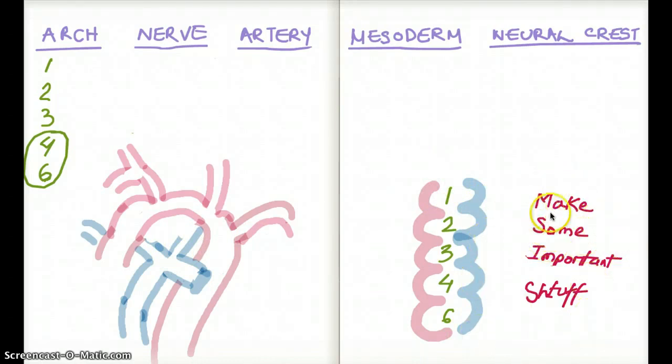The mnemonic says make some important stuff. Now stuff, you see it has an 'sh' here. It's because the four and six share some of the structures. So that's why it's shared, hence stuff.